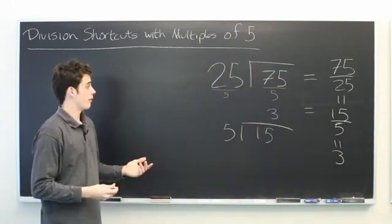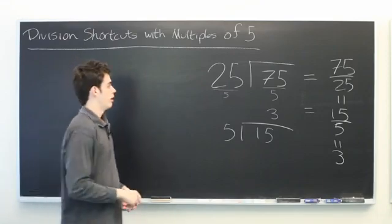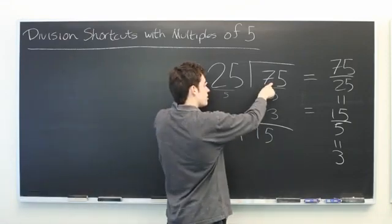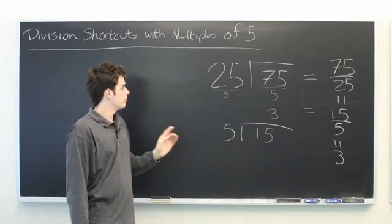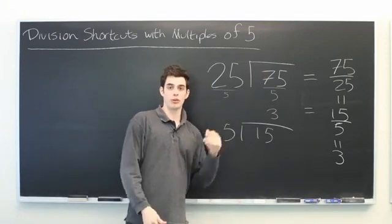And the nice thing about this idea is that it works with any number. As long as both of these numbers are multiples of the same smaller number, you can use this simplification technique to get a much easier problem.